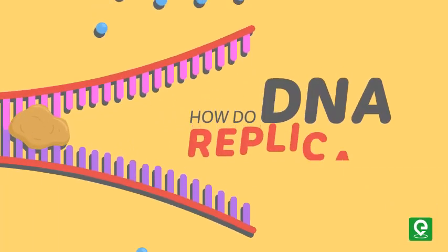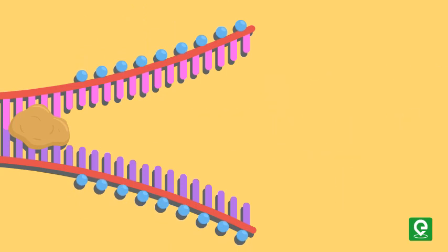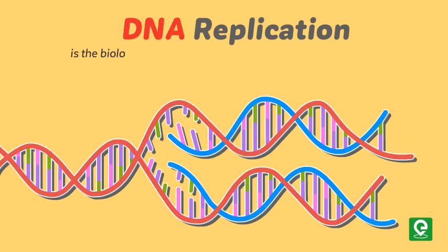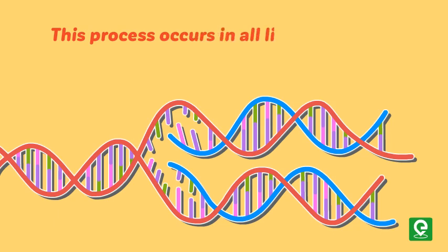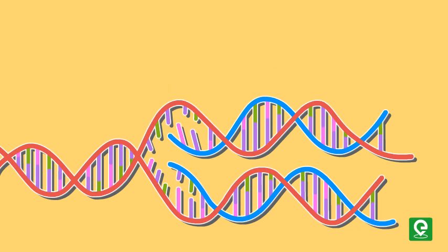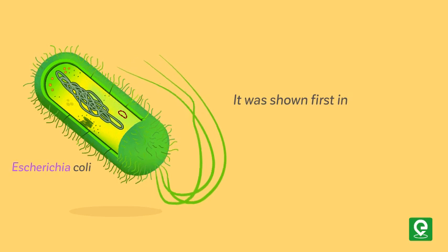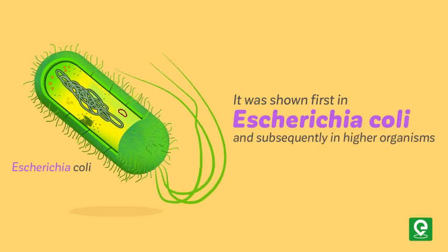How does DNA replicate? DNA replication is the biological process of producing two identical replicas of DNA from one original DNA molecule. This process occurs in all living organisms and is the basis for biological inheritance. DNA replicates semi-conservatively, first shown in Escherichia coli and subsequently in higher organisms such as plant cells and human cells.